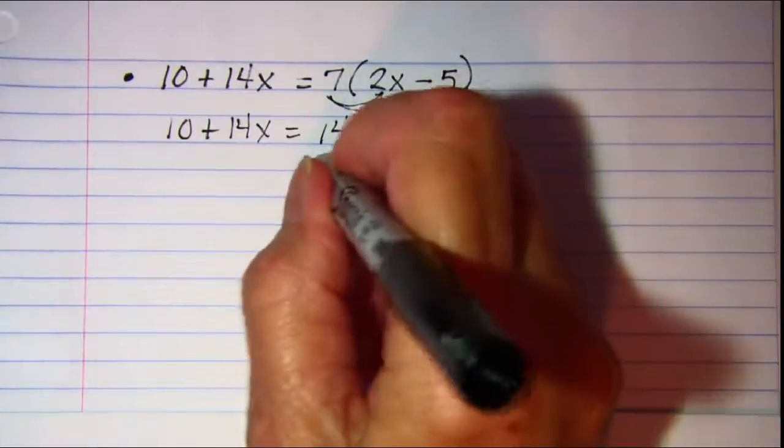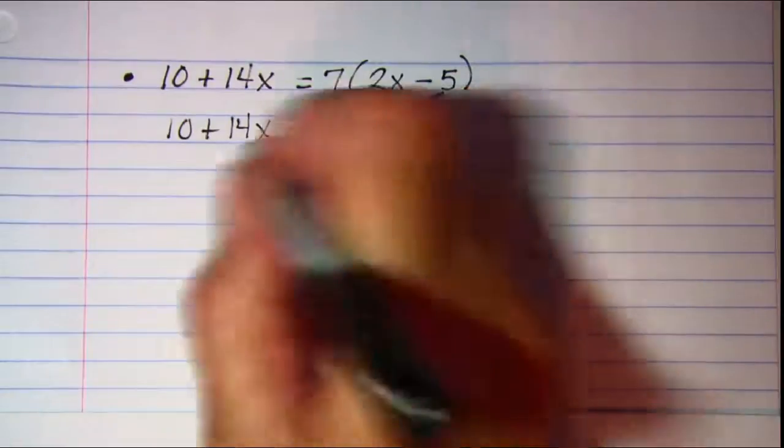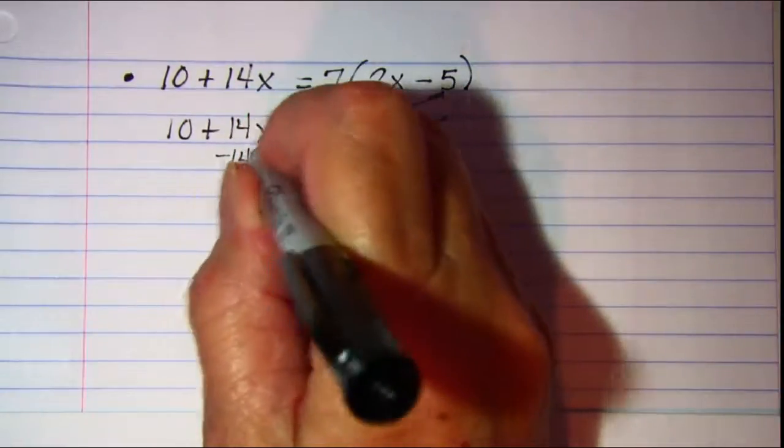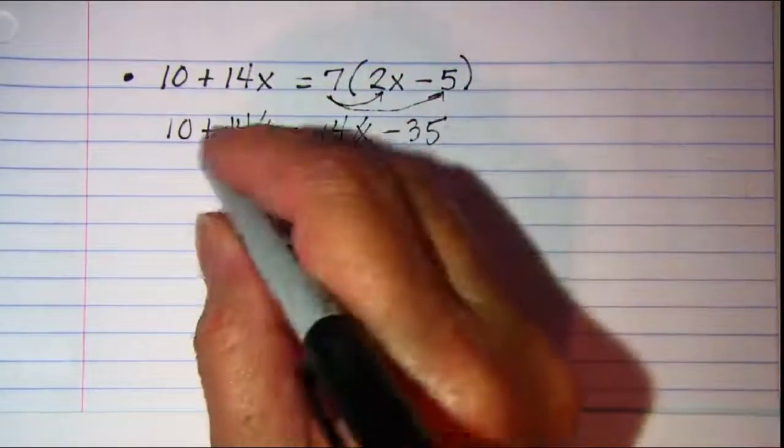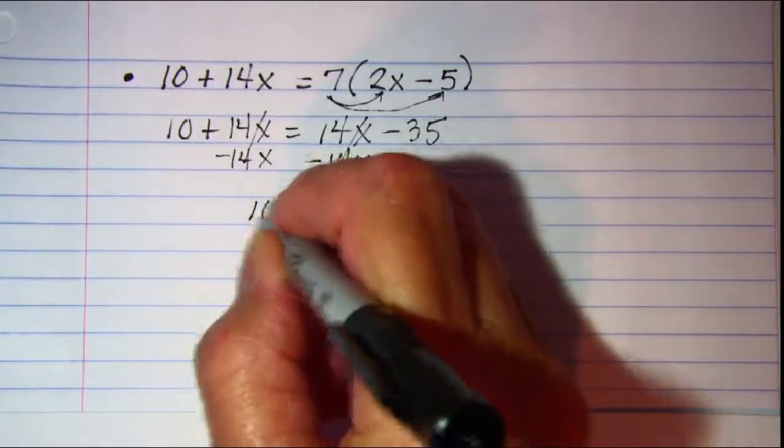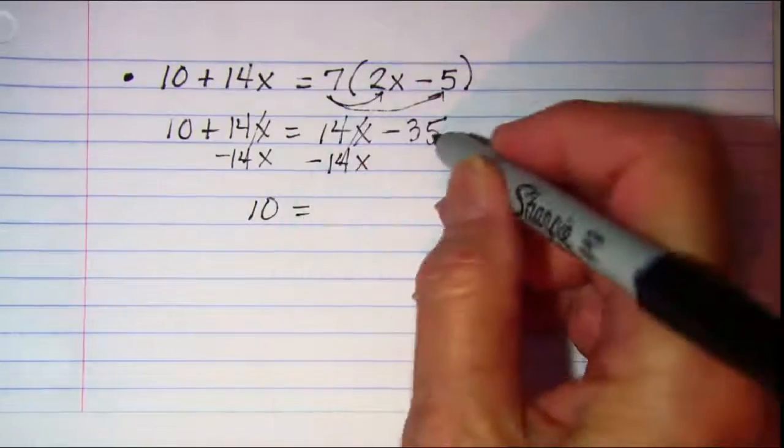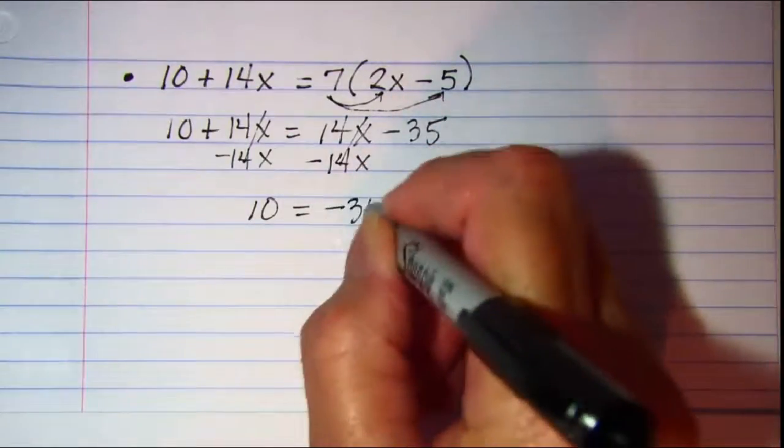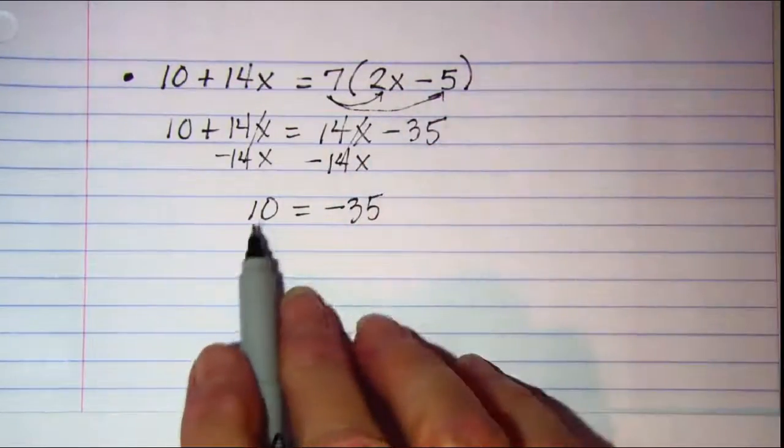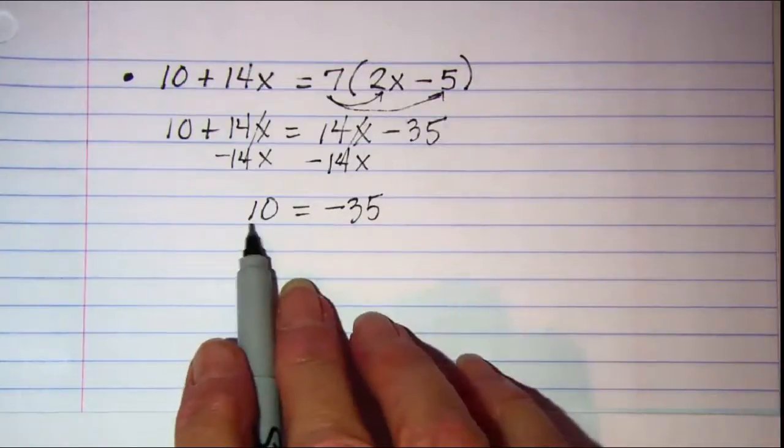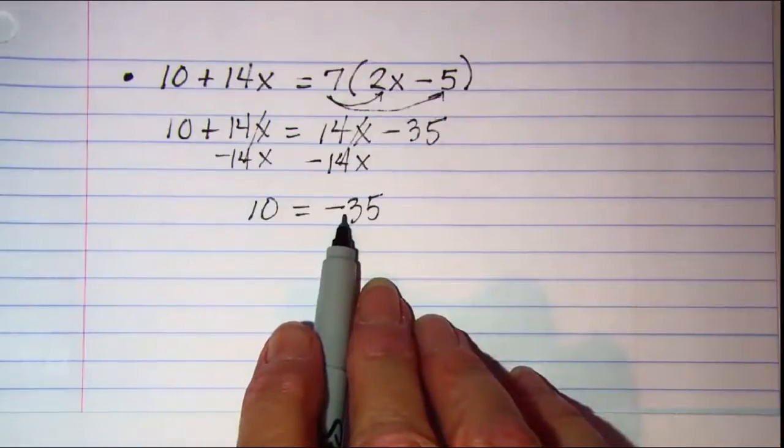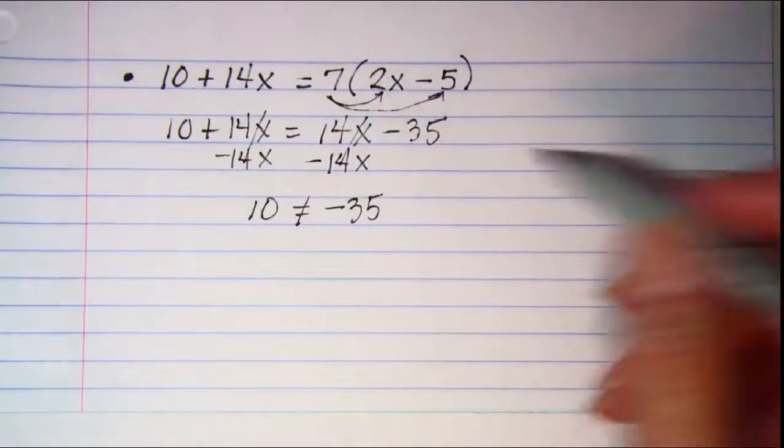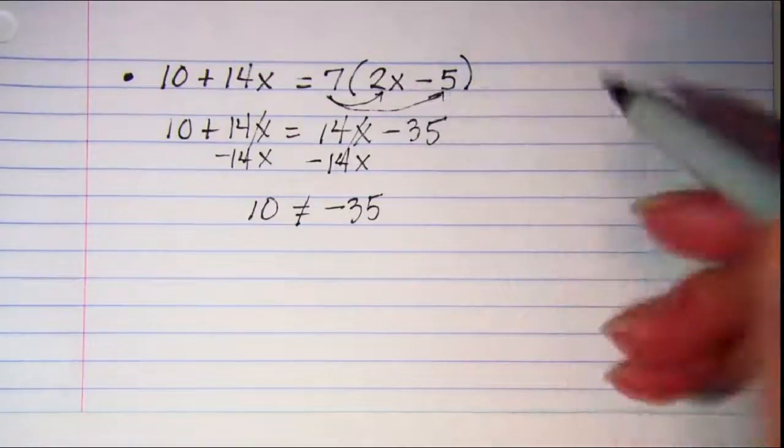Let's subtract 14x from both sides. These will cancel, and these will cancel. I end up with 10 on the left side, and negative 35 on the right side. As you can see, this is not a true equation. 10 is never equal to negative 35, and this equation is a contradiction.